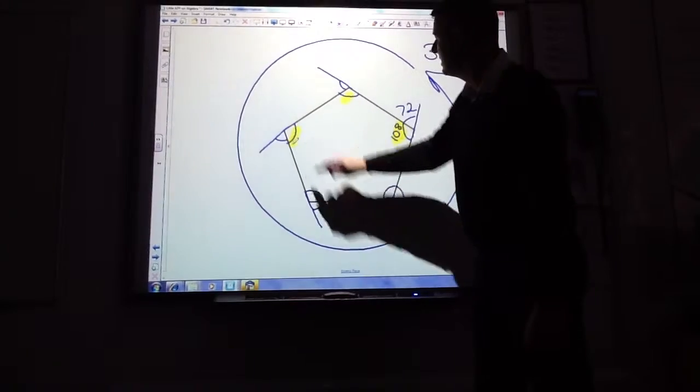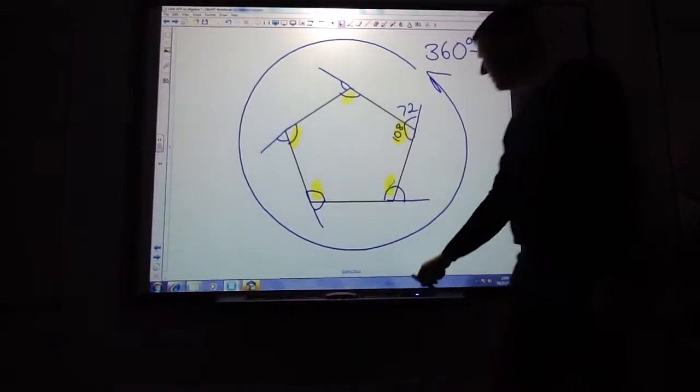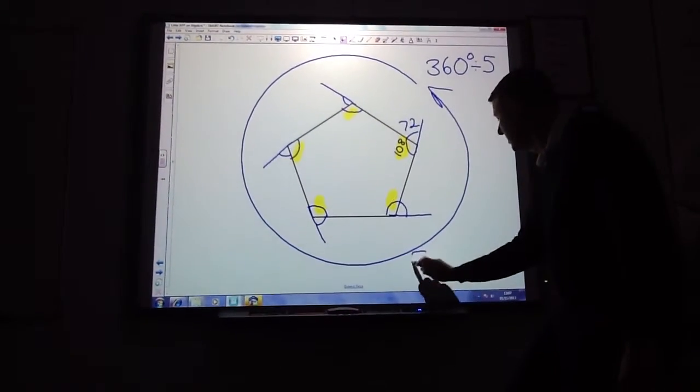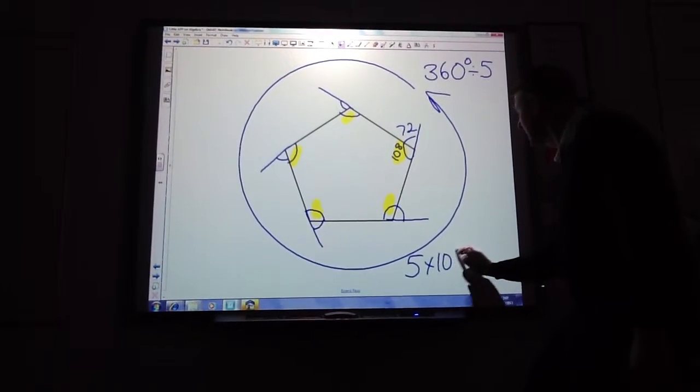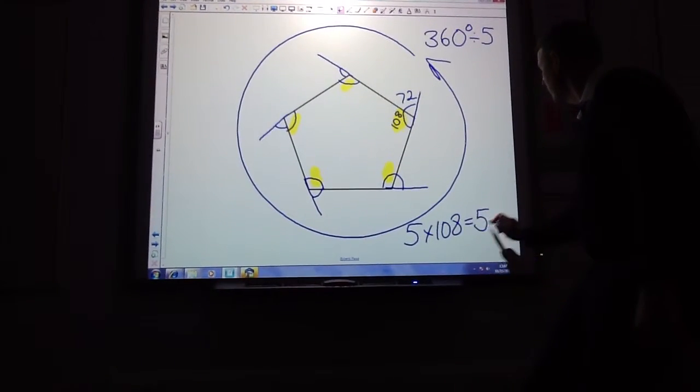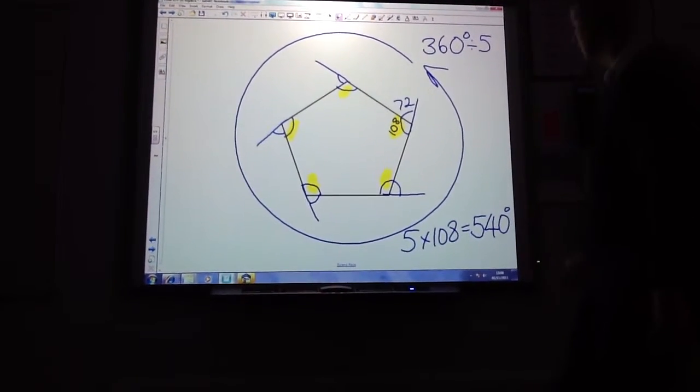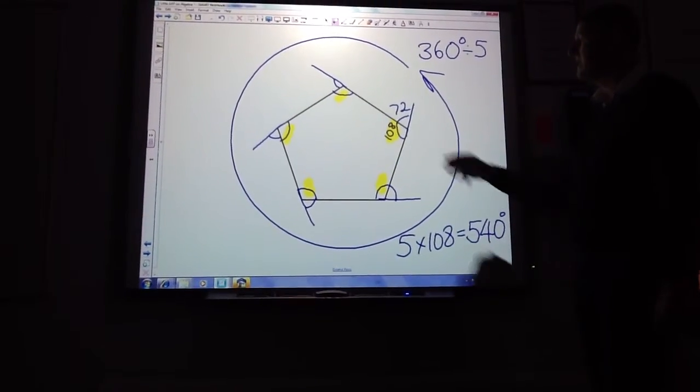One, two, three, four, five. If I did five times by 108, I would get 540 degrees. There are 540 degrees in a pentagon.